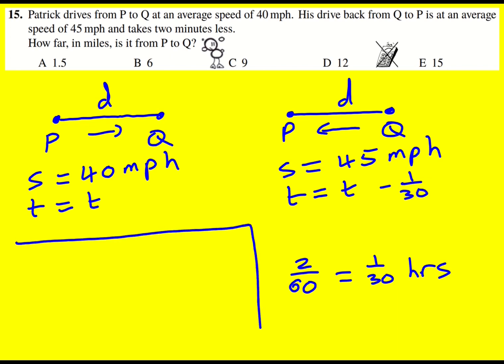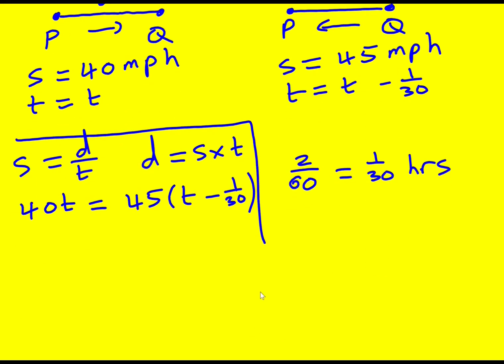Now we can use a formula that speed equals distance over time, or average speed is distance over time. So that means that the distance, which is the same, is going to equal speed times time. For the first journey it's going to be 40T, and then for the second journey, the distance is the same, so they're going to be equal. It's going to be 45 times this new time, which is T minus 1 over 30 in hours. We have an equation that we can solve to find T, and then we can substitute back.